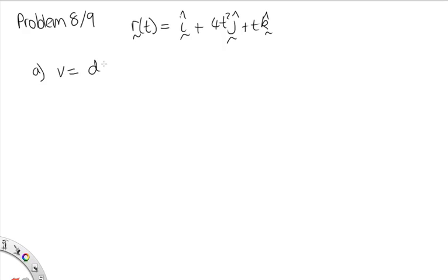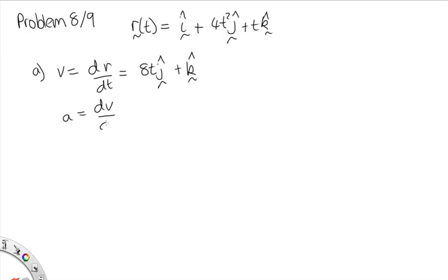Velocity is equal to dr/dt, so we just need to find the derivative of this with time. When we take the derivative of i, we get 0 because it's constant. When we take the derivative of 4t squared, we get 8tj. And when we take the derivative of tk, we get plus k. So that is our expression for the velocity. For the acceleration, we use dv/dt. The derivative of 8t in the j direction is just 8 in the j direction. The derivative of k is 0.